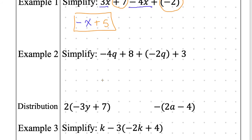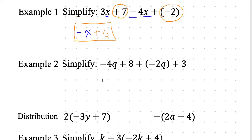Moving on to example number two. I need someone to tell me what my like terms are — what am I going to underline? Larissa says: negative 4q and negative 2q. Perfect.